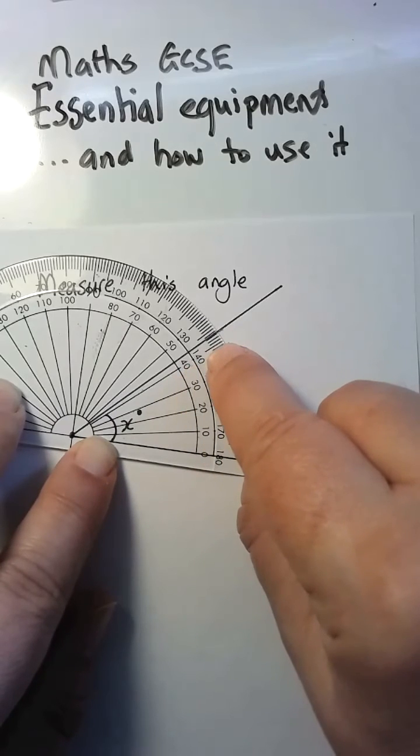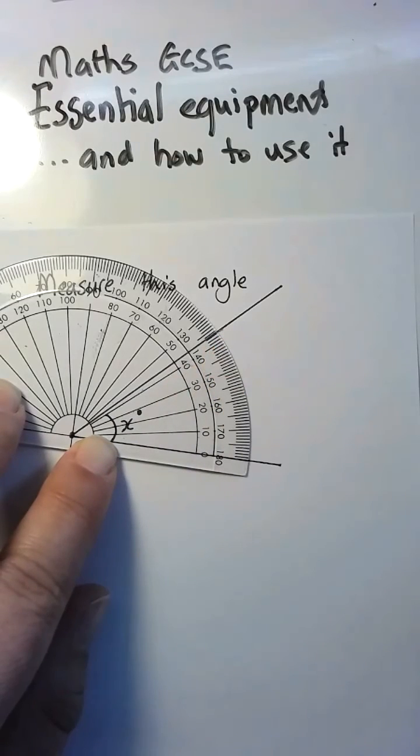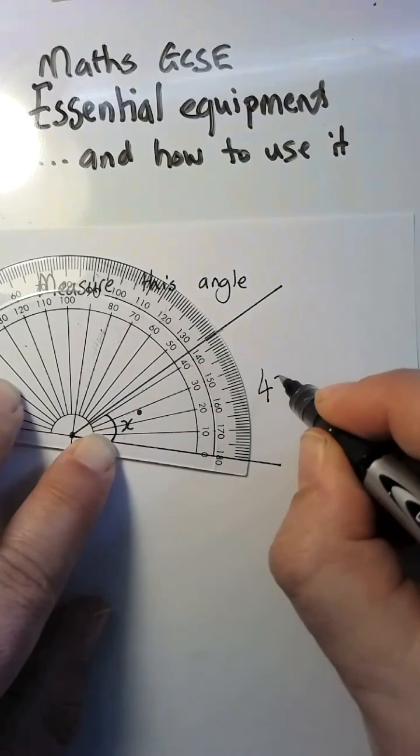I go along to this large line, and I count the little lines. It's one, two, three. So it's just about on that angle, so the answer to this question is 43 degrees.